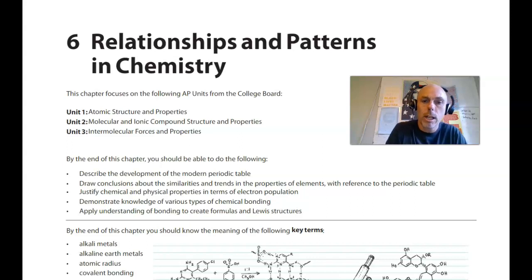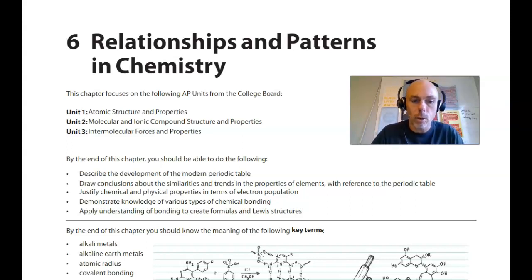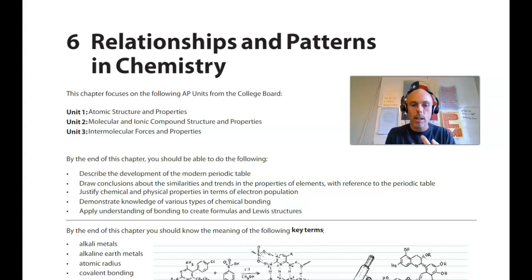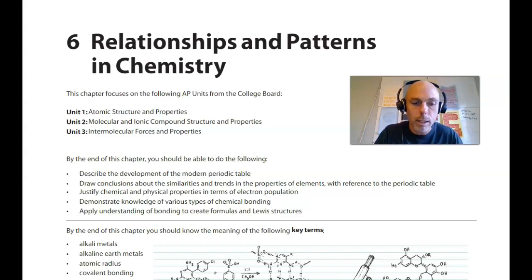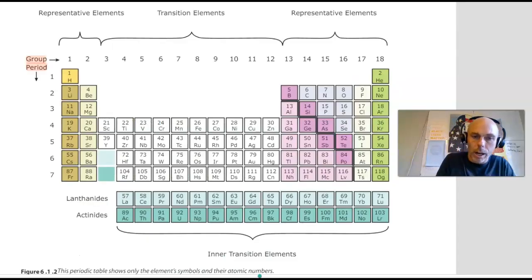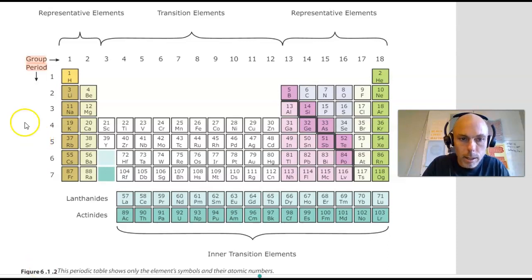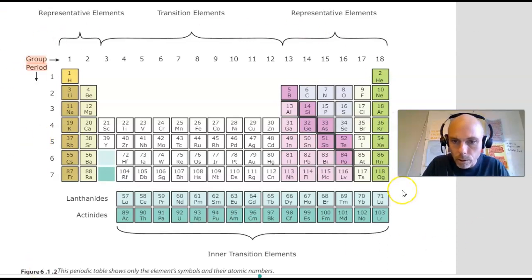The third trend is electronegativity, which describes a whole lot about why atoms bond the way they do. So atomic radius or atomic size, ionization energy, and electronegativity will be the three periodic trends we'll be talking about in these two lectures. I've turned to page 309 of our textbook, or 317 of our e-book, and here's a beautiful periodic table labeled with all sorts of important information.